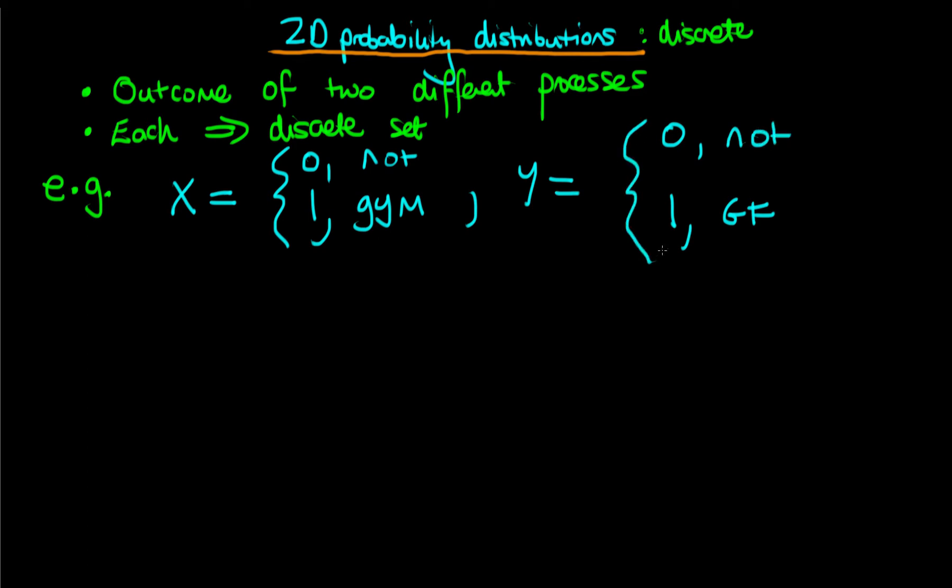And the reason we're using random variables to represent each of these different characteristics is that we're imagining that we are randomly sampling an individual from the population. And before we interview that individual, we don't know if they go to the gym, nor do we know whether or not they have a girlfriend.